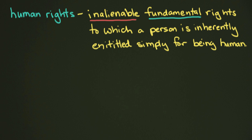Rights — we've talked about this in our last video, so you should remember that, and if you don't, you can go back and look at that video. Inherently means it's essential — it's a part of being a human, a natural part of it. And entitled means it's owed to you. You are owed, just for being a human, this fundamental right which is not to be taken away from you.